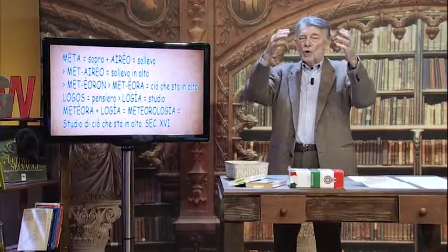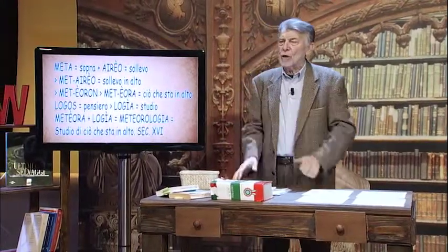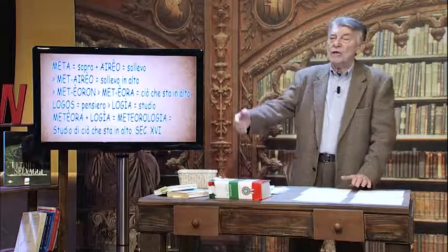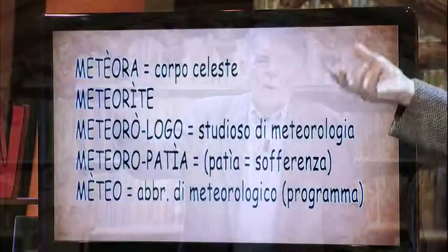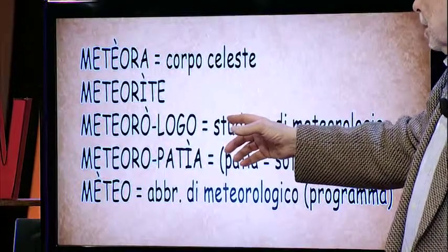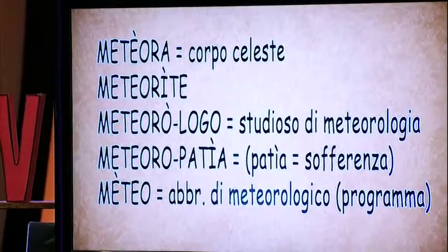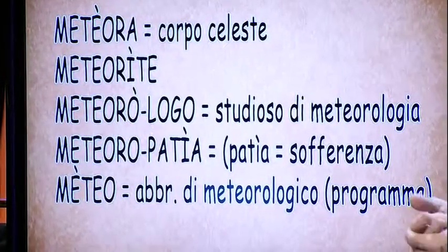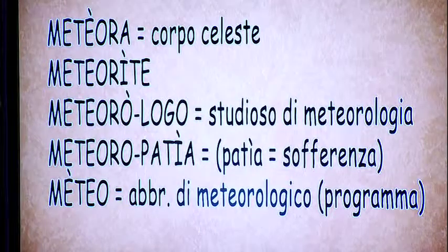Che cos'è che sta in alto? Tutto ciò che è il cielo, l'atmosfera, le nubi, la pioggia, il sole, eccetera — studio di ciò che sta in alto, che risale addirittura al secolo XVI, cioè al Cinquecento. Per convincerci ancora di più che questa è la pronuncia giusta, vediamo delle parole composte che derivano da meteorologico: meteora (corpo celeste), meteorite, meteorologo (lo studioso di meteorologia), meteoropatia (chi soffre i cambiamenti di tempo), e ancora l'abbreviazione meteo, per indicare le previsioni meteorologiche.